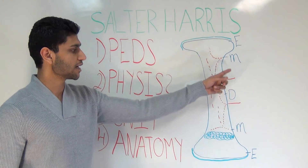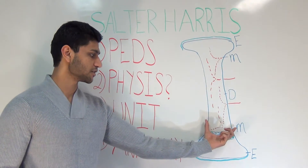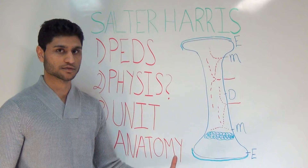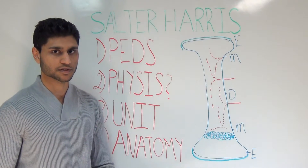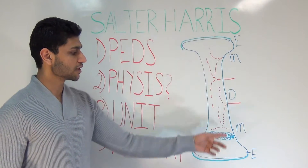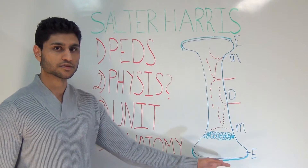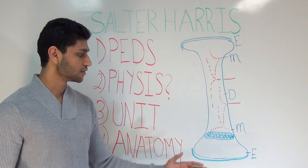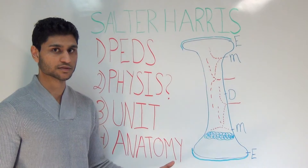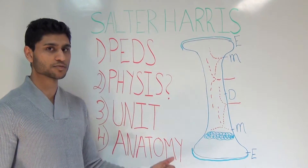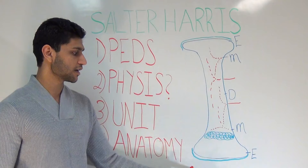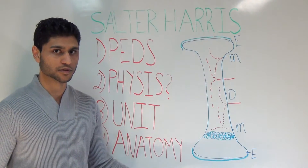On either side of the diaphysis, you have a portion where the bone flares out, and that is known as the metaphysis. And you have two of these. Finally, at the proximal and distal ends, we have the epiphyses. Do not confuse the term epiphysis with physis — physis is the growth plate, while epiphysis is the proximal or distal end of the long bone.